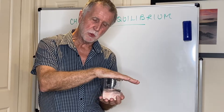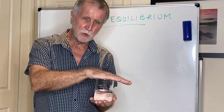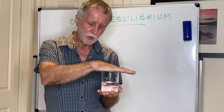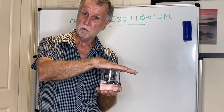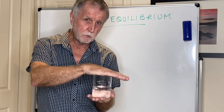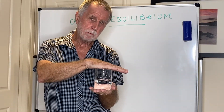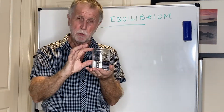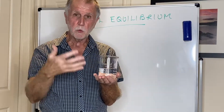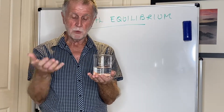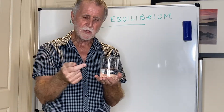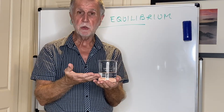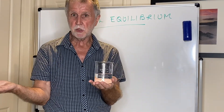What would happen if I put something over the top, closing that beaker to the environment? Obviously the water that evaporates can't escape. So what's going to happen? The space above the liquid will fill with water vapor, but because it can't escape, once that space is saturated with water vapor, evaporation will come to a stop. That seems logical.